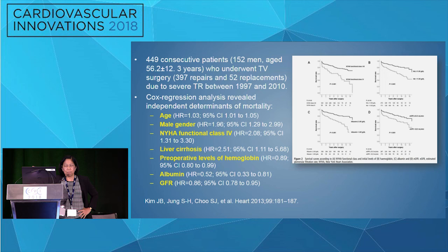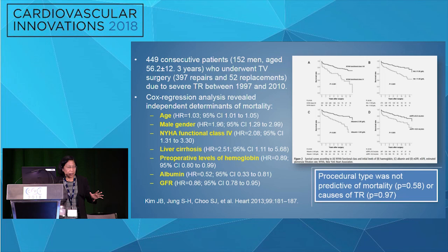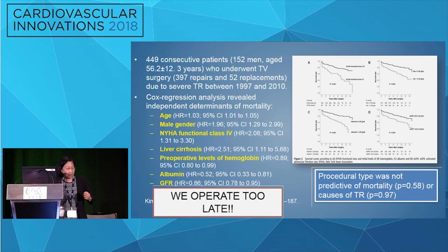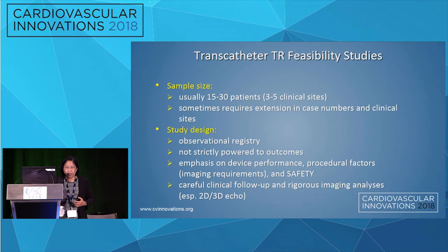Looking at TR feasibility early feasibility studies in the US: these are very small studies, sometimes requiring extension as done with the SCOUT trial. They're observational, not randomized, and not powered for outcomes. They emphasize device delivery and technical success with rigorous clinical follow-up and imaging analysis. Inclusion criteria typically require moderate-to-severe symptoms and severe — sometimes moderate — TR, primary or secondary depending on device type. Exclusion criteria include extreme or torrential TR in some cases; the FORMA trial allowed absolutely torrential TR, including a patient with four centimeters squared. Severe RV dysfunction and failure were typically excluded, as was severe pulmonary hypertension above 60 mmHg, cirrhosis, and end-stage renal disease.